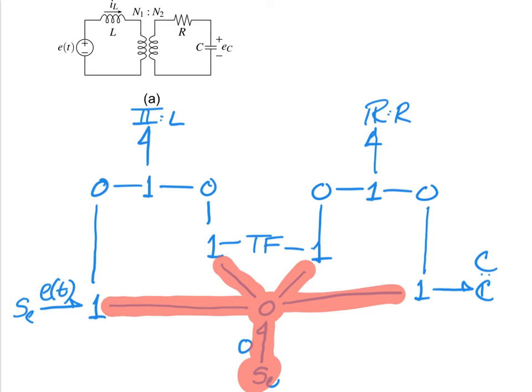So now, if we begin to simplify by taking all those junctions with only two bonds and collapsing, what we're going to find is that this effort source would go and connect directly to that one junction. The one junction would go and connect directly to one side of the transformer, the transformer to one side of this one junction, and the other side of this one junction directly to that capacitor.